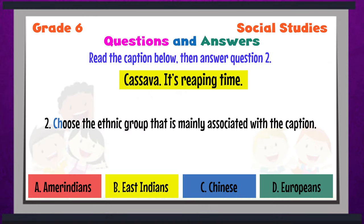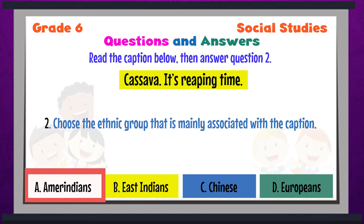Question 2: Choose the ethnic group that is mainly associated with the caption. A — Amerindians, B — East Indians, C — Chinese, or D — Europeans. The answer to question 2 is A. Yes boys and girls, one of the main crops that the Amerindians plant is cassava — that's their staple diet. They use cassava to make farine, casripe, or even tapioca, and they use those products as a part of their diet.